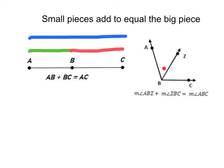Same thing with this angle here. We can see that the angle ABZ added to the angle ZBC, the two small angles, are going to add to equal this whole big angle ABC.